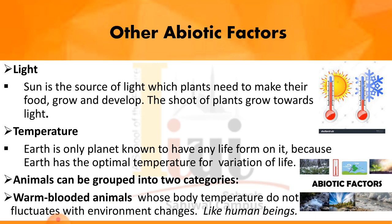Warm-blooded animals are those animals whose body temperature does not fluctuate with the environment. The external environment does not disturb their body temperature — it remains the same regardless of external environment changes. For example, human beings and polar bears are warm-blooded animals, as their body temperature does not fluctuate.